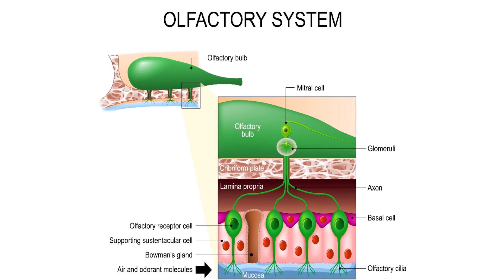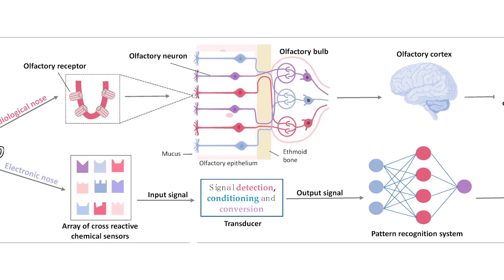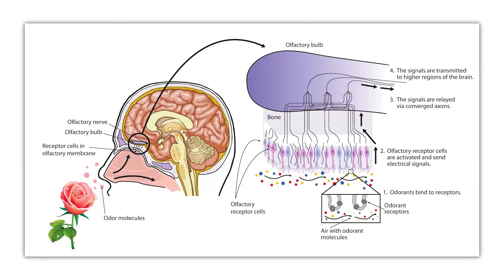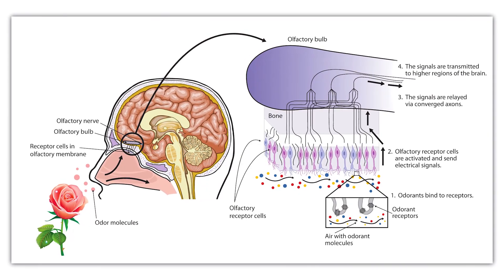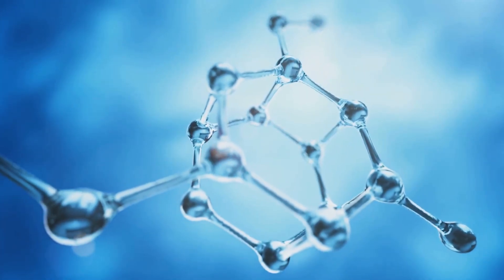According to this theory, when an odorant molecule binds to a receptor, electrons in the receptor can tunnel through the molecule, a quantum mechanical process, if the vibrational energy of the molecule matches the energy gap in the receptor. Different molecular vibrations would trigger different receptors, creating distinct smell perceptions.